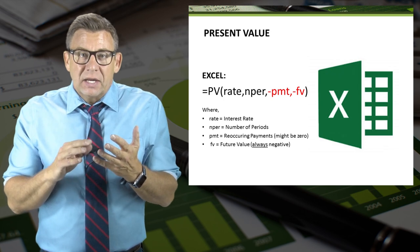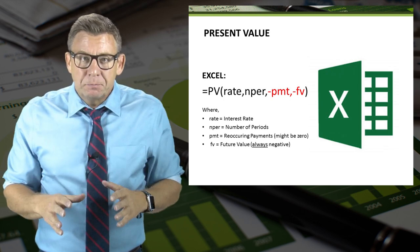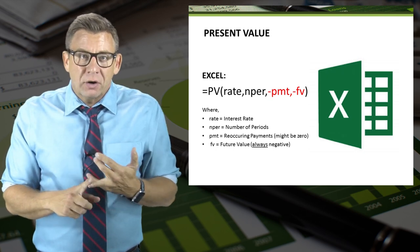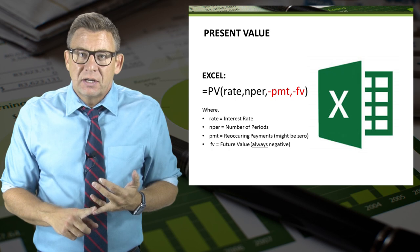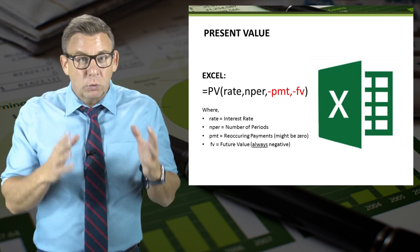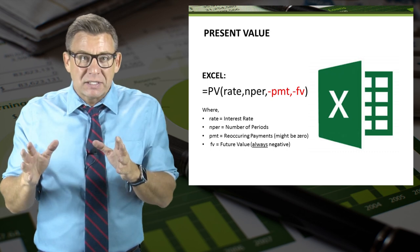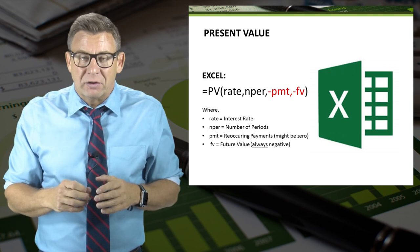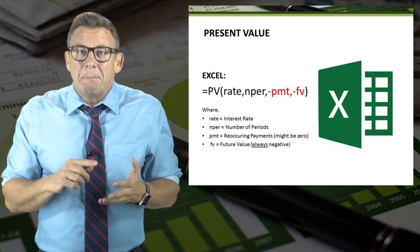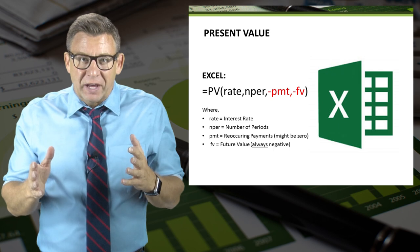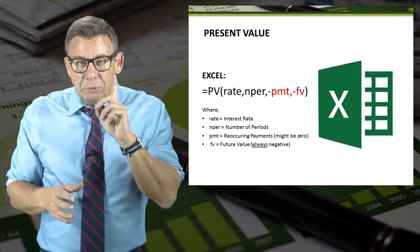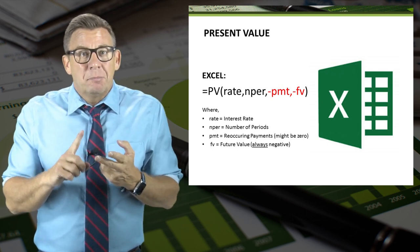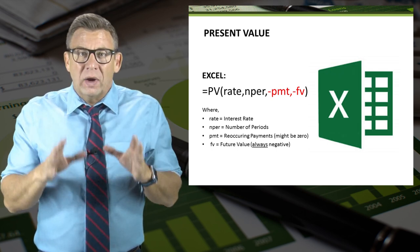The formula is equals PV, open parentheses. Rate, which is the interest rate. N per, which is the number of periods. Minus payment, which is a regular reoccurring amount — and it's possible that this could be zero, because not every scenario has a regular reoccurring amount. And finally, minus FV, which is the future value. When solving for present value in Excel, future value and payment are always negative amounts.